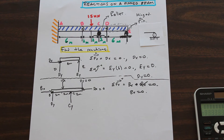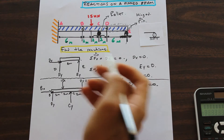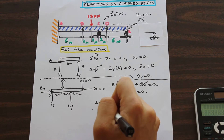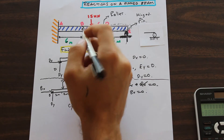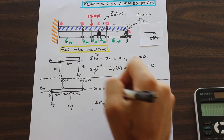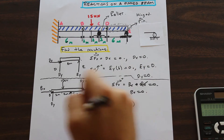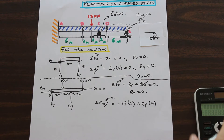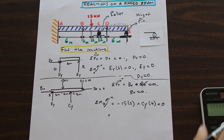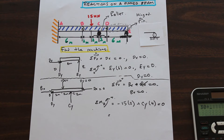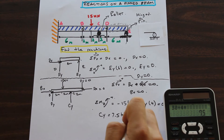Let's solve for CY by taking the moment about B in the positive direction. We have a 15 kN force downward — that's negative — and it is 2 meters from B. We have CY in the positive direction, which is 4 meters from B, and DY is zero so we don't include it. That's all equal to zero. Moving the 30 to the other side: 30 divided by 4 gives us CY equal to 7.5 kilonewtons.